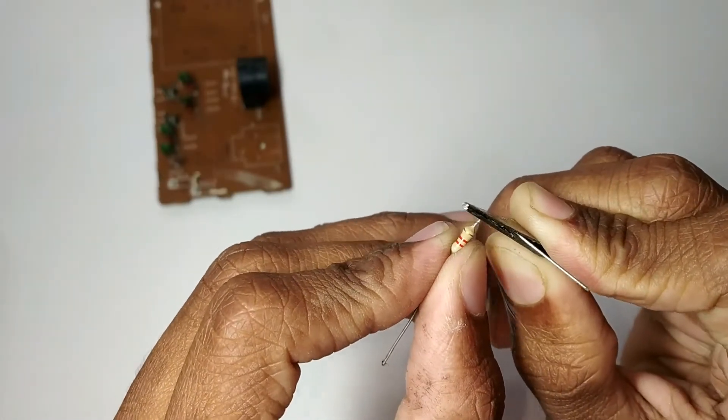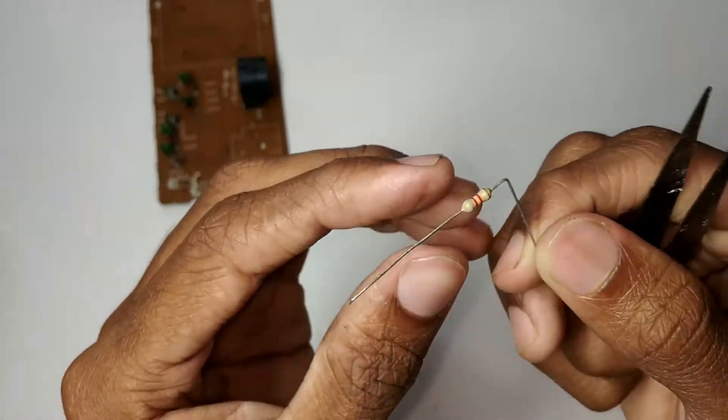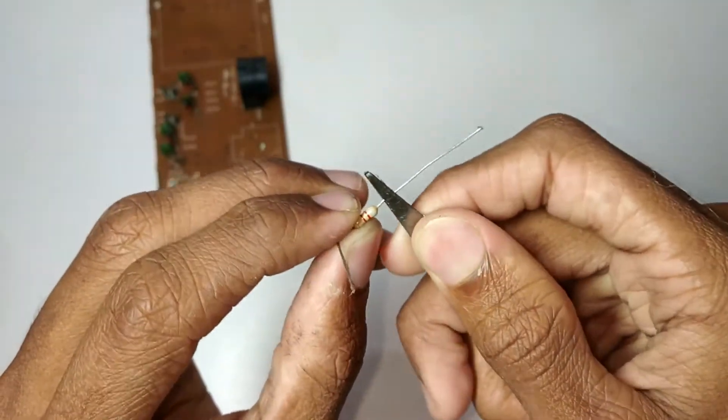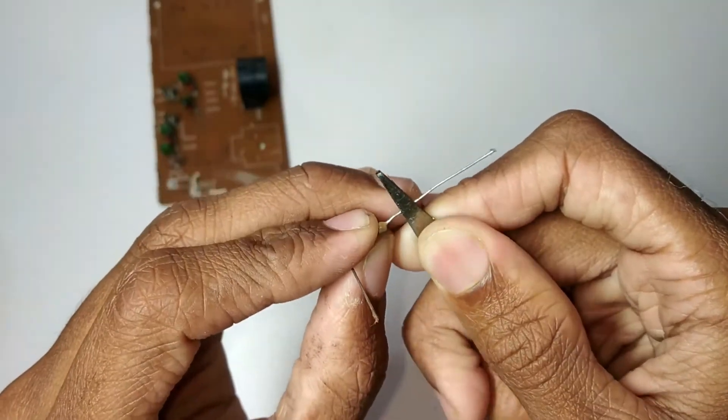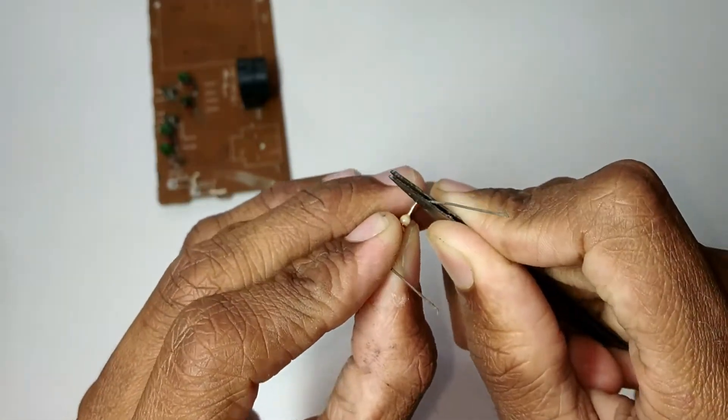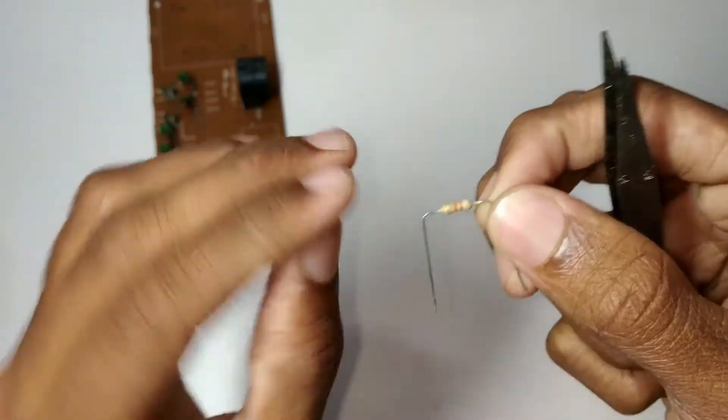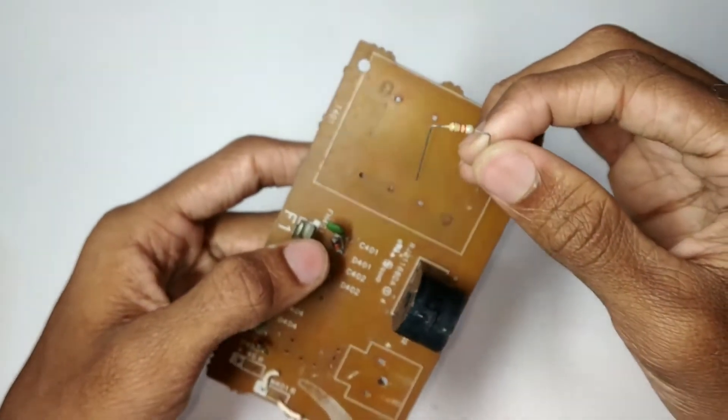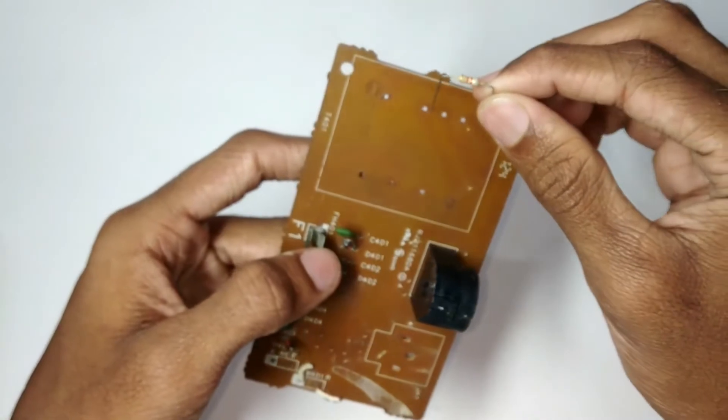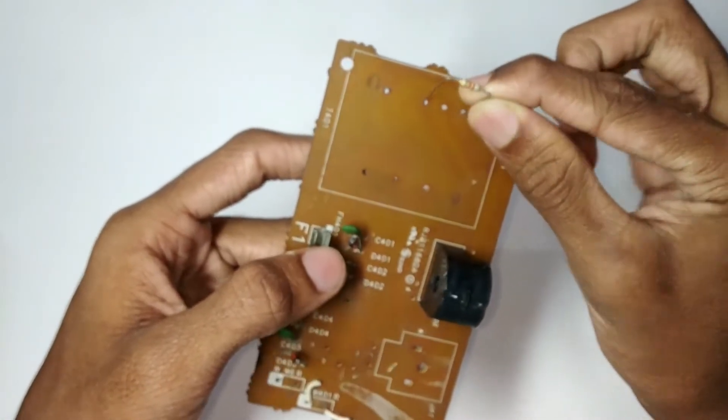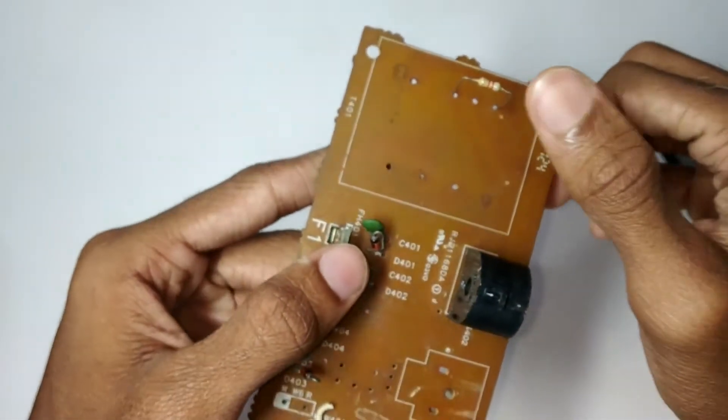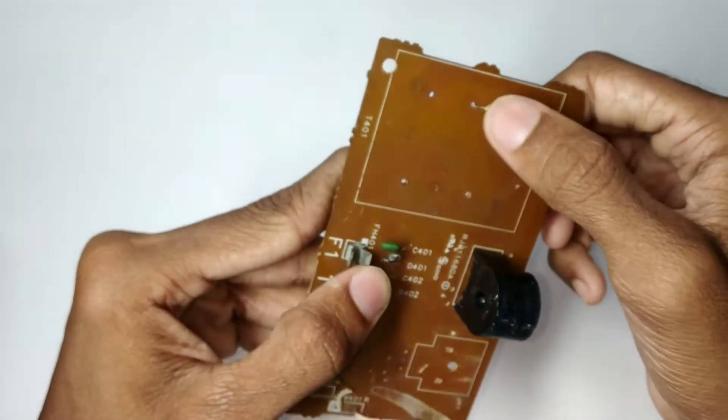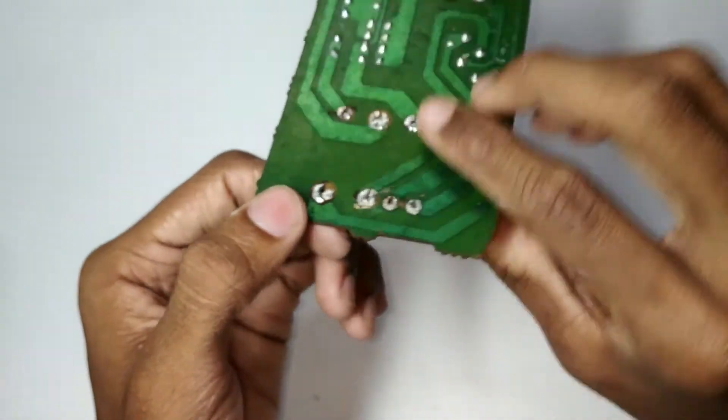Now we have to put a new part of the component. We have to put a new resistor. This is the same as the resistor. Now we are just using the two holes. I want to put the new part in the component.